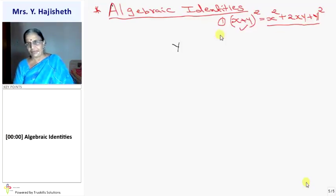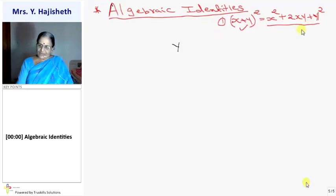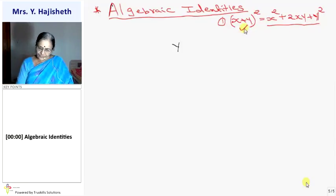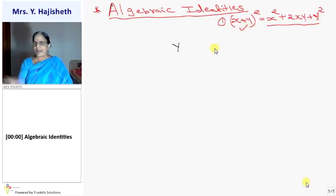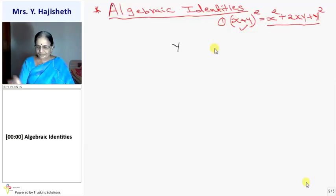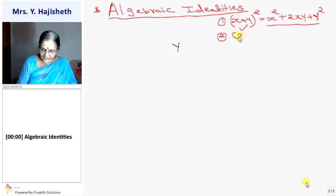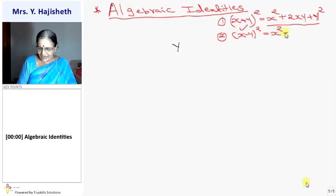Both ways you should remember. If the expanded form is given, you can get the factored form by factorization. If the simplified form is given, you can get the expanded form by using this formula. Second identity: x minus y whole square — the only difference is the middle term is minus.